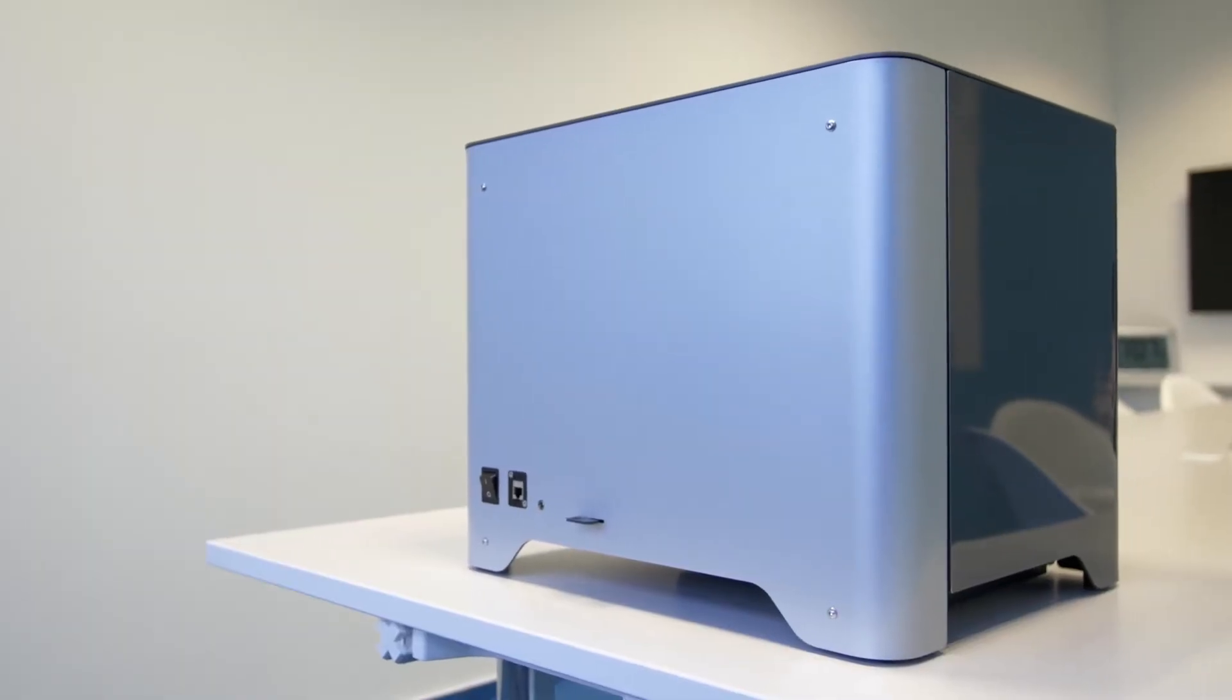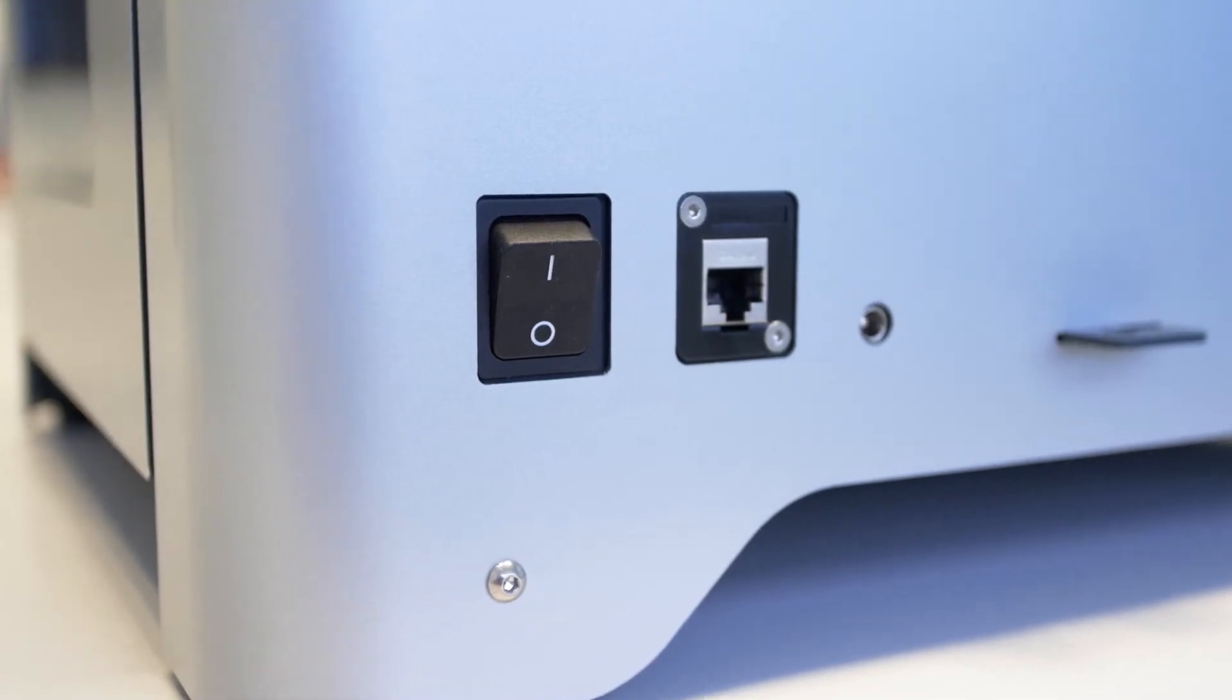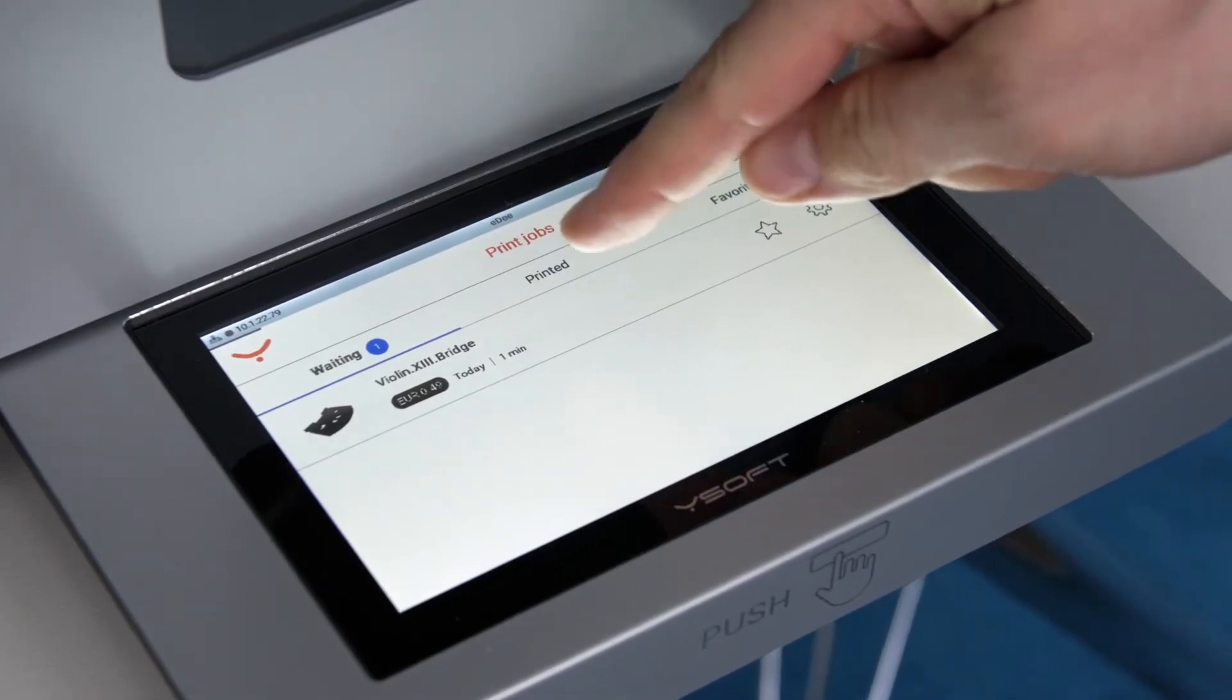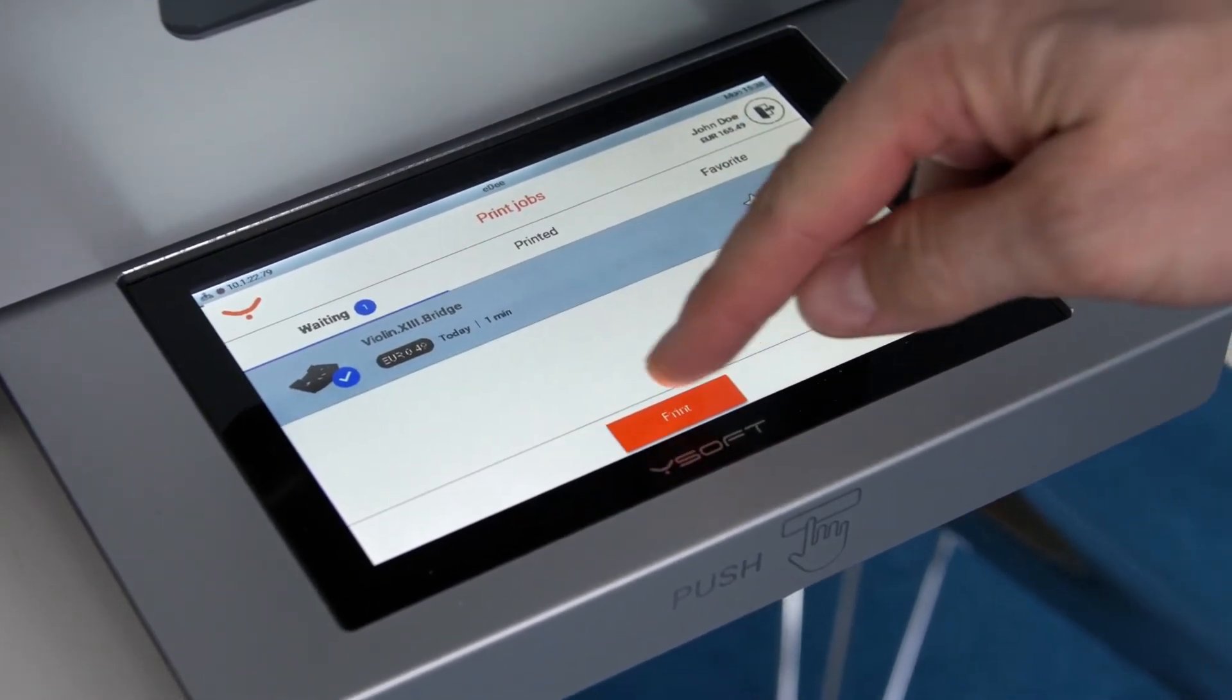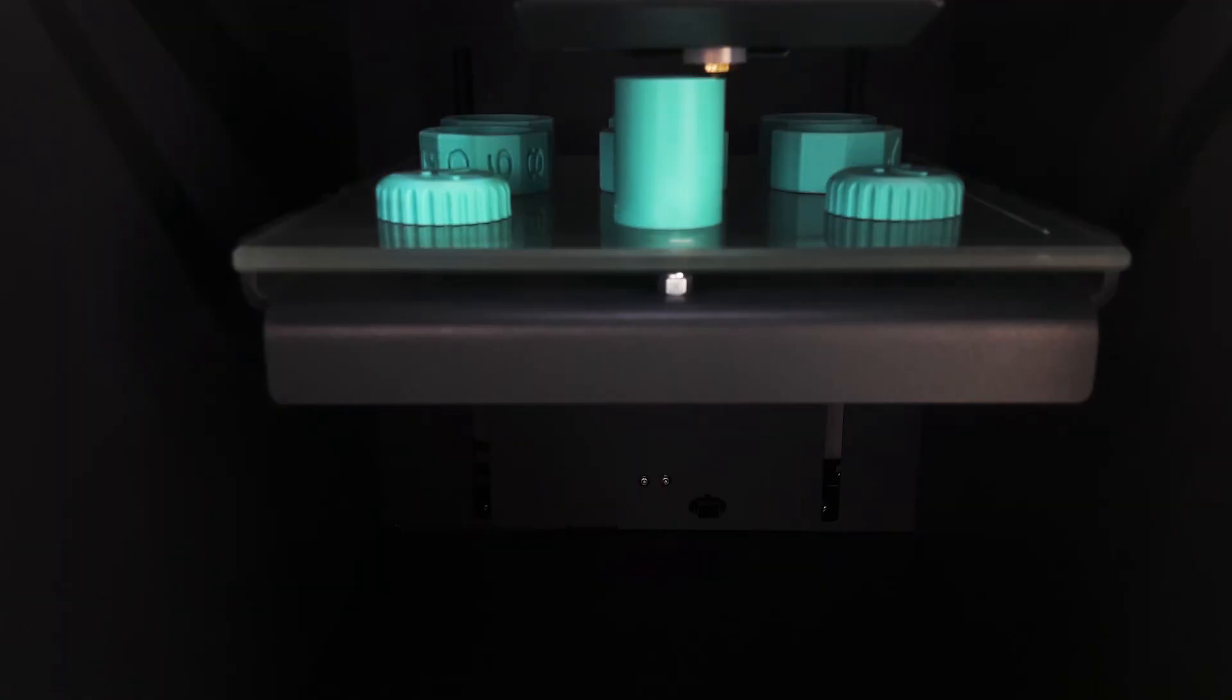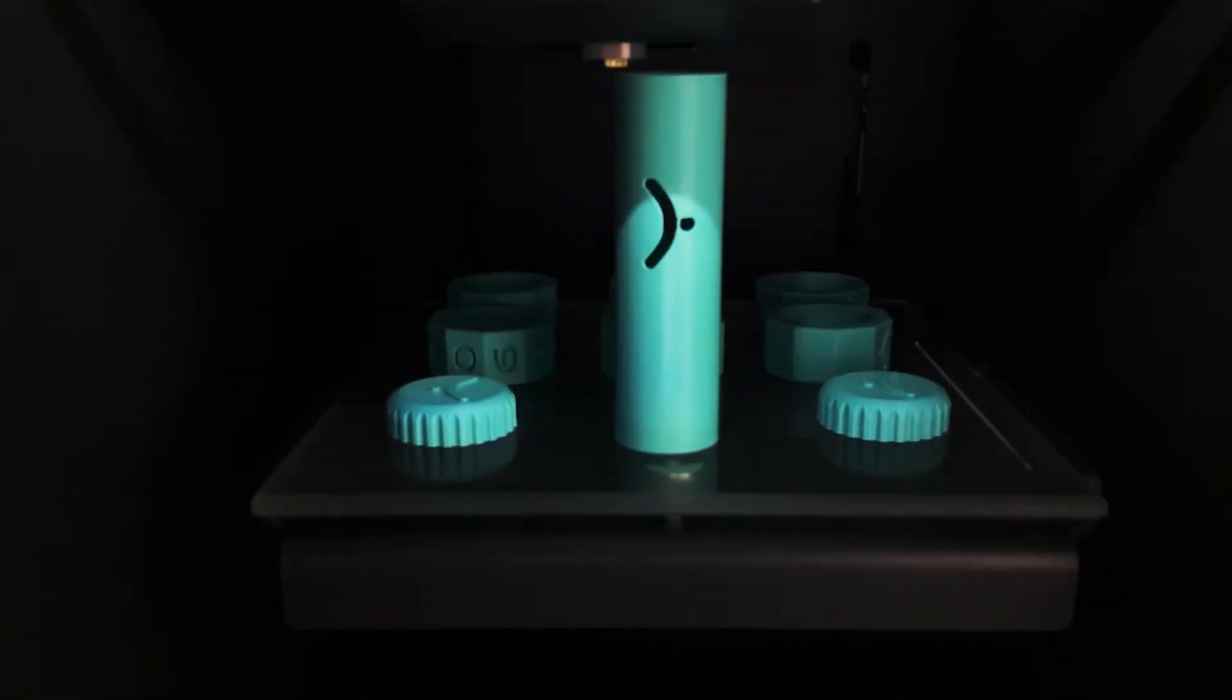The back of the printer has the power button, power and LAN slots. ED printers are network printers, and that's important because students need to be able to print from any available printer. When they submit their print job, it waits on a server until they get to an ED printer and request the job to print.